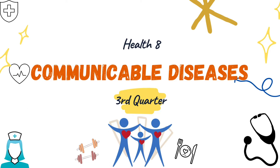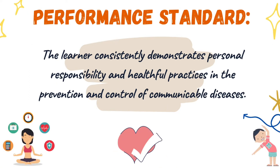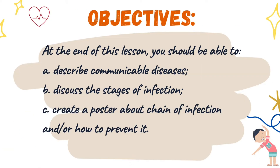For the content standard, the learner demonstrates understanding of principles in the prevention and control of communicable diseases for the attainment of individual wellness. For the performance standard, the learner consistently demonstrates personal responsibility and helpful practices in the prevention and control of communicable diseases. For the objectives, at the end of this lesson you should be able to: (a) describe communicable diseases, (b) discuss the stages of infection, and (c) create a poster about the chain of infection or how to prevent it.